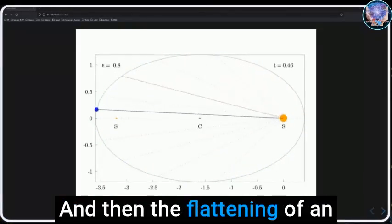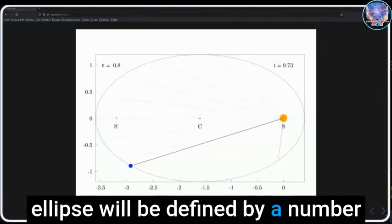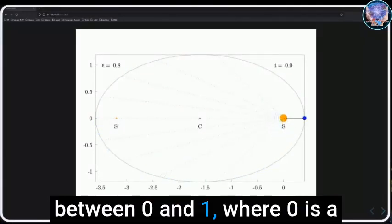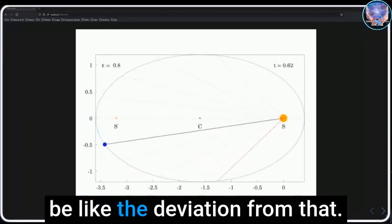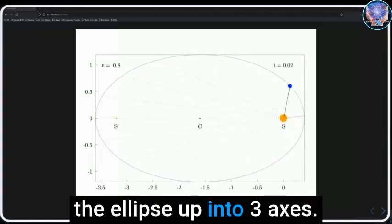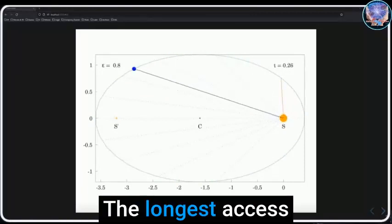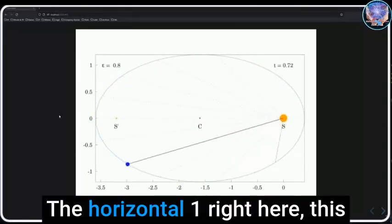The flattening of an ellipse will be defined by a number between zero and one, where zero is a perfect circle and one would be a straight line. You can break the ellipse up into three axes: the longest axis between them would be the horizontal one, this would be your major axis.